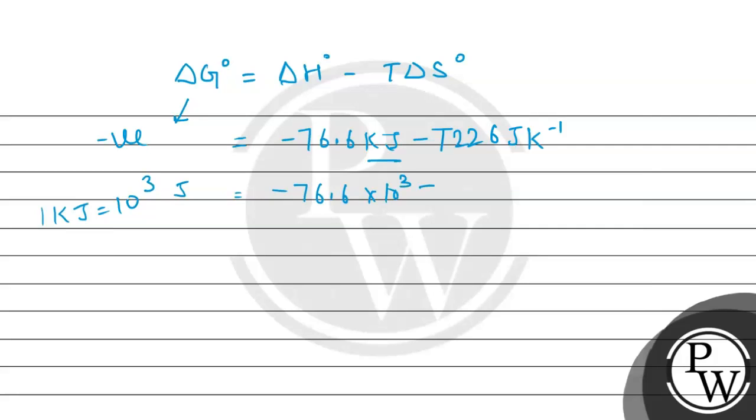This is -76.6 × 10³ joules minus 226 J/K times T kelvin. Kelvin and per kelvin are cancelled. So here we can see joule and joule remain.